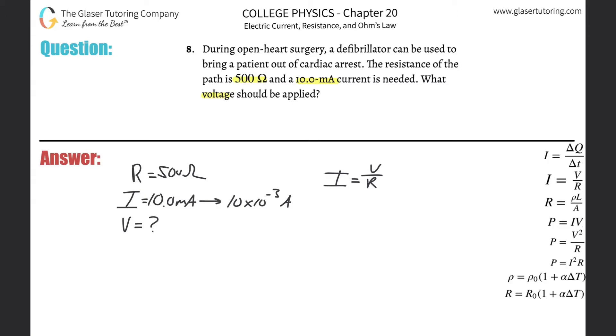So if I have to find the voltage, another way you can also memorize this formula is V is equal to IR. Sometimes I like to memorize it that way. All this is is just a simple cross multiplication of the top equation.